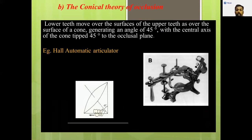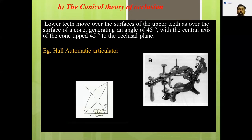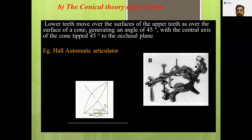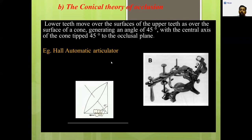Coming to conical theory — conical theory was put forward by Hall. According to conical theory, the mandible moves over the upper teeth in such a way that it moves along the surface of a cone with a central angle of 45 degrees. Based upon that, Hall's automatic articulator was fabricated.